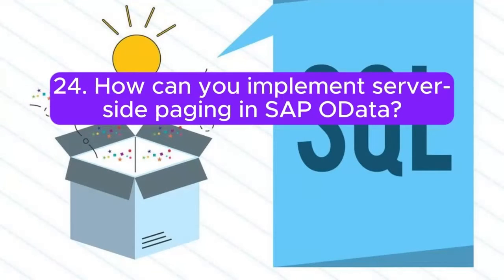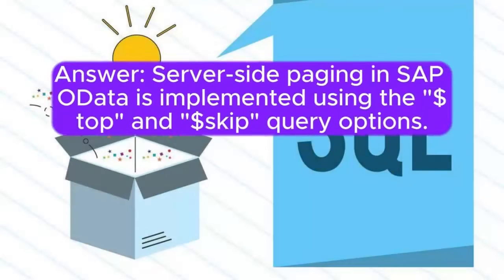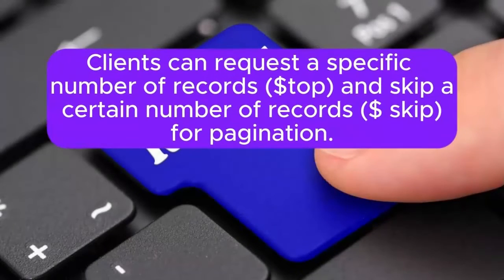Question 24: How can you implement server-side paging in SAP OData? Server-side paging in SAP OData is implemented using the $top and $skip query options. Clients can request a specific number of records ($top) and skip a certain number of records ($skip) for pagination.